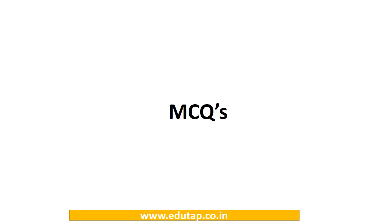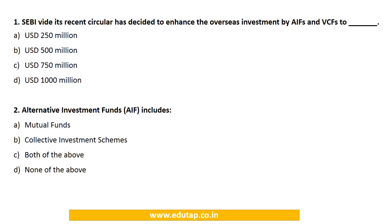Now let's look at some MCQs that can be framed from this topic. Question 1: SEBI vide its recent circular has decided to enhance the overseas investment limit by AIFs and VCFs to — options: US$250 million, US$500 million, US$750 million, or US$1000 million. The correct answer is option C — US$750 million. Question 2: Alternate Investment Funds includes — mutual funds, collective investment schemes, both, or none of the above. The answer is option D — none of the above, as AIFs do not cover mutual funds or collective investment schemes.